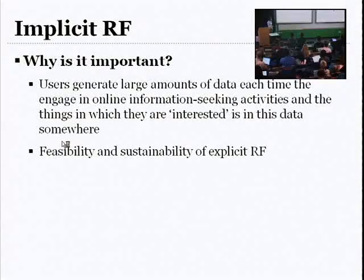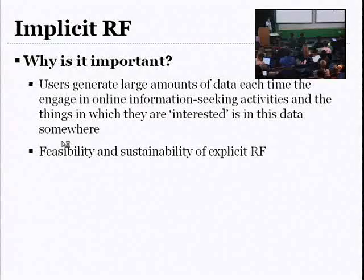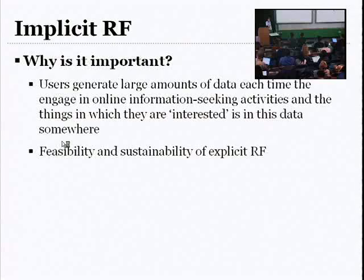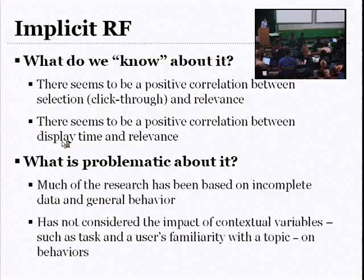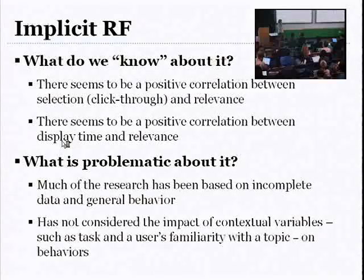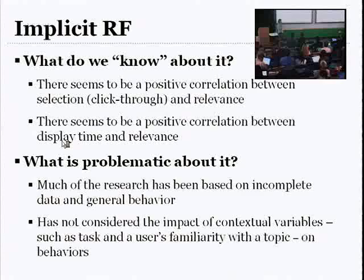This is important because all of that data is there — the person's interests are in that gigantic mess of page views, and your job is to figure out what the good things are. Implicit feedback also addresses whether explicit relevance feedback is feasible — will people do it consistently? And is it sustainable for long-term modeling? Implicit feedback says here's some good stuff we may be able to use. It's usually thought to be a little bit weaker, but it's available in larger quantity and is somewhat easy to access, especially if you work for a search engine company.